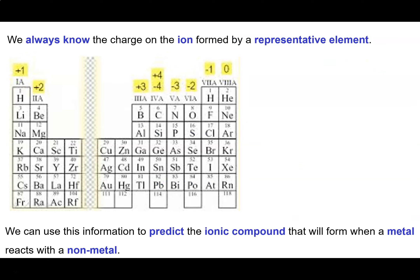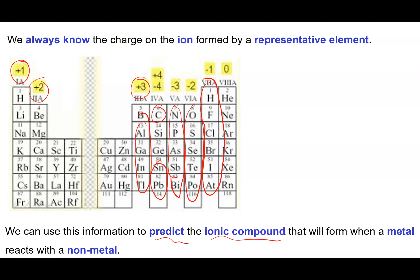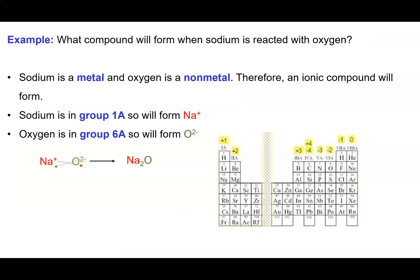The cool thing about representative elements is you always know the charge on the ion they will form. Group 1A → +1, Group 2A → +2, Group 3A → +3. Group 4A → −4 for the non-metal and +4 for the metal. Group 5A → −3; Group 6A → −2; Group 7A → −1. This means we can predict the ionic compound that forms when a metal and a non-metal react without drawing Lewis diagrams.